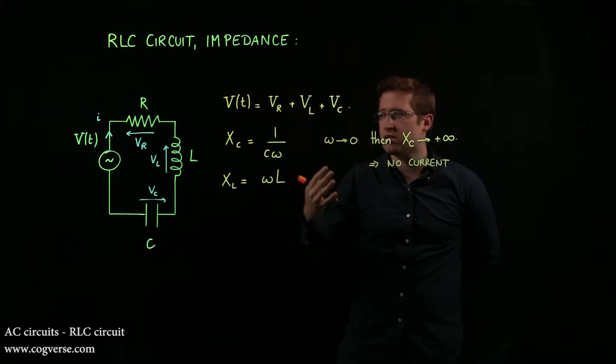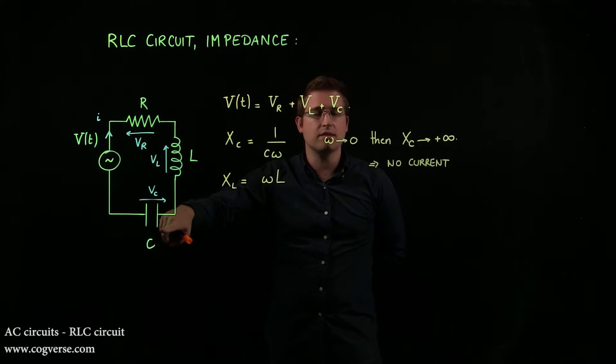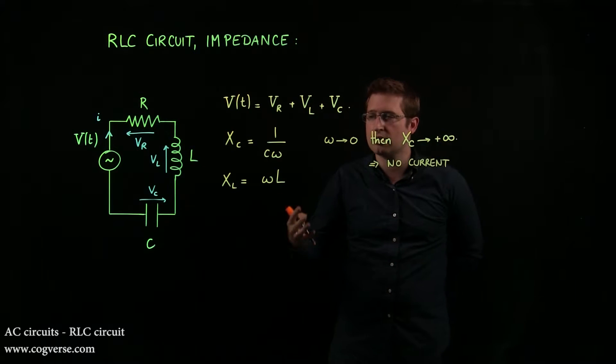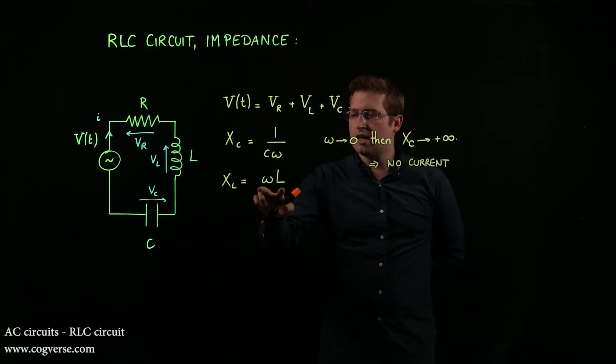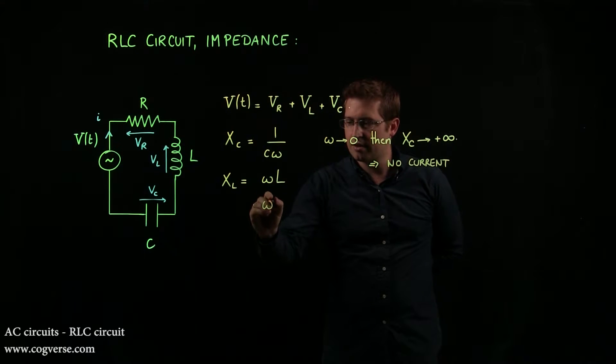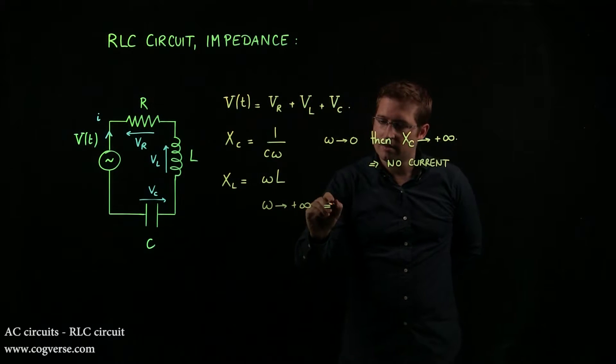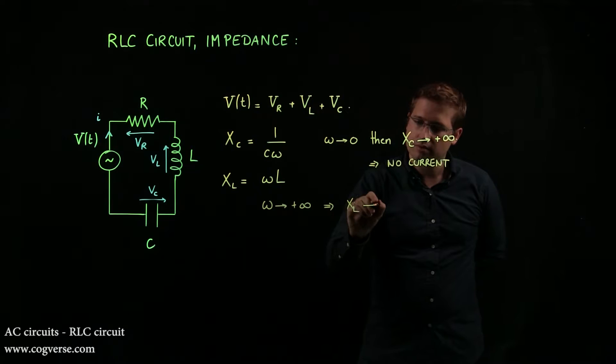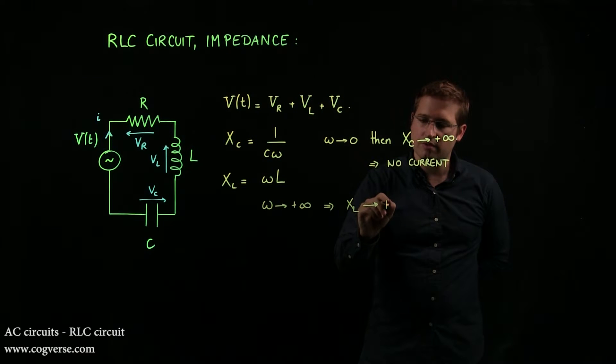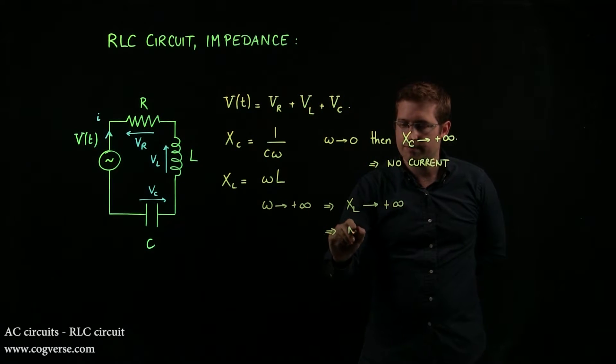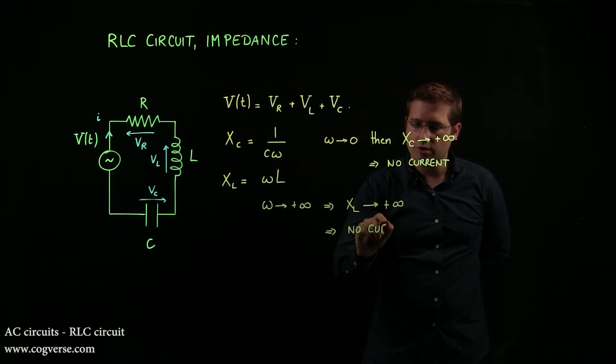Actually it implies no current coming into C, but because everything is in series, it means no current in the circuit. And here, if we have omega goes to infinity, then XL goes to infinity. And that also means no current.